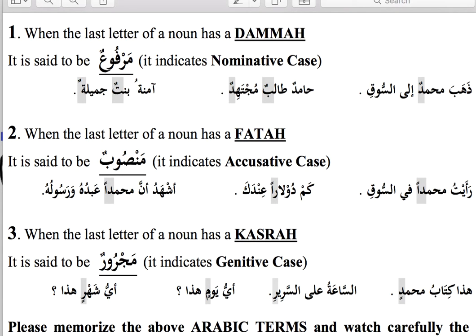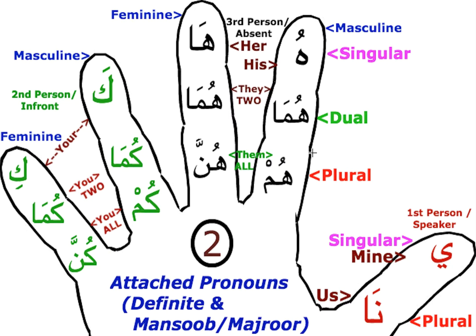Having said that, we will move on to attached pronouns — attached conjugations. This attached conjugation can be attached to either a harf, an ism, or a verb. That is the reason I had to explain those three categories. It is very important to understand and memorize these attached pronouns, which are used very frequently.